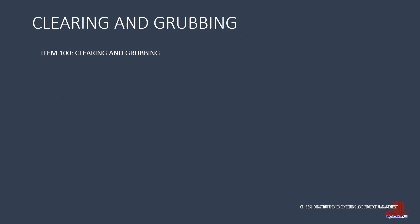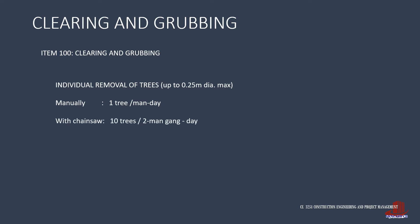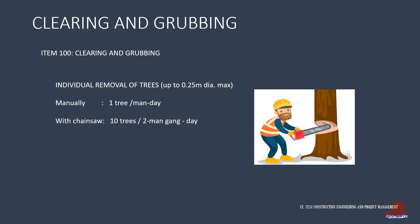In cases where the foliage would include young trees of up to half a meter diameter, manual labor for cutting such trees is standardized at one tree per man per day. But using a chainsaw will do the job faster at 10 trees per two man-gang per day. A man-gang for such a job requires one laborer handling the chainsaw and the other assisting him.